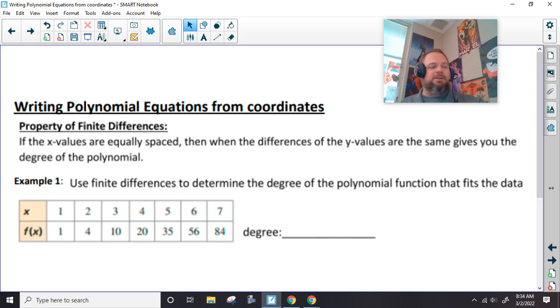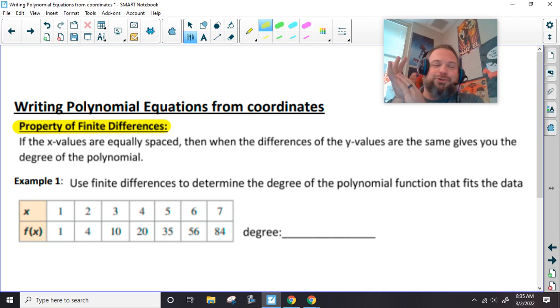So today we're going to be writing polynomial equations from coordinates. We're spelling finite differences. Finite means a set, small set. And differences means subtraction. So basically, we're subtracting.